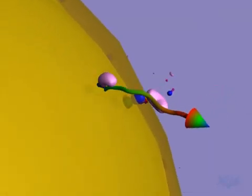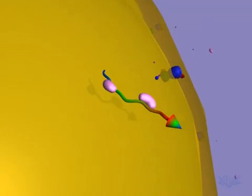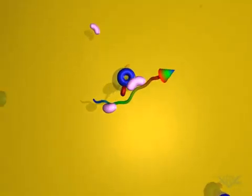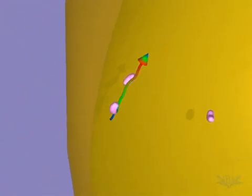Chaperonins aid in unfolding the protein so it can travel through the organelle membrane. Here, we see two chaperonins bound to the protein that will enter the mitochondria.